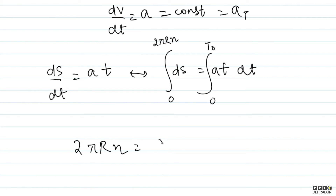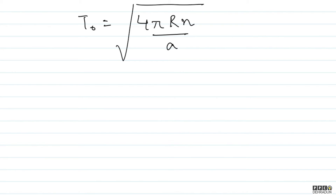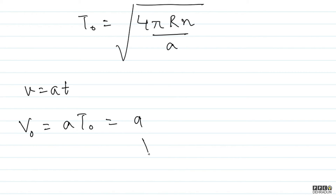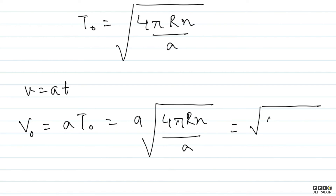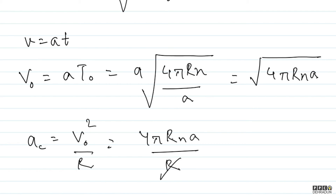So 2πrn = a·t0²/2, which gives t0 = √(4πrn/a). Then the speed at that moment is v0 = a·t0 = a·√(4πrn/a) = √(4πrna). Therefore, centripetal acceleration ac = v0²/r = 4πrna/r = 4πna.